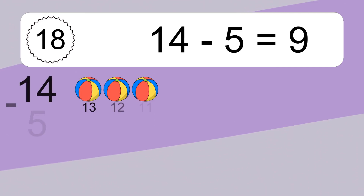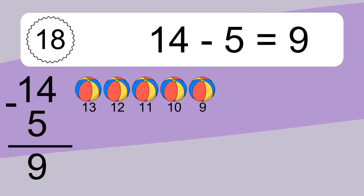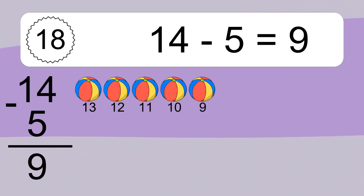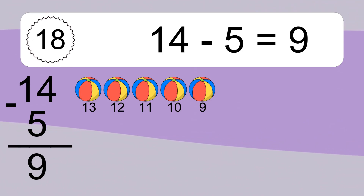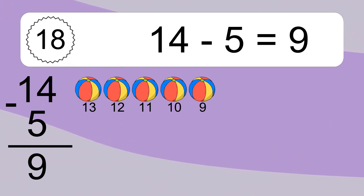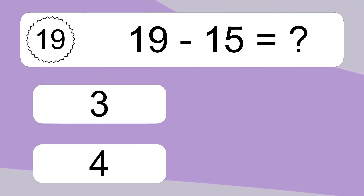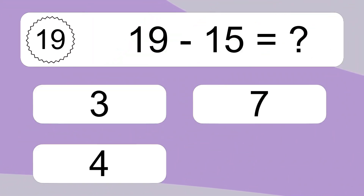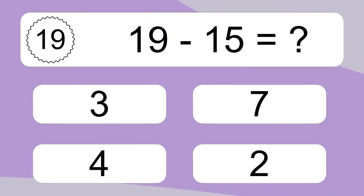14 minus 5 equals what? 14 minus 5 equals 9. Let's count it: 13, 12, 11, 10, 9.